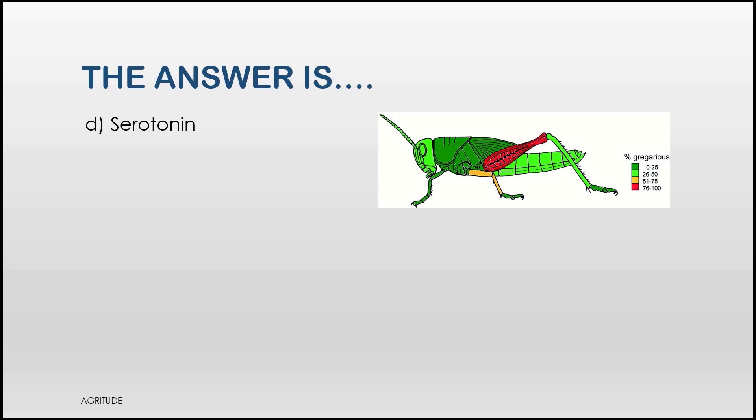The answer is Serotonin, the happy chemical. The release of serotonin in the nerve system is induced when a locust is touched on hind femur by another locust. And this leads to gregarization.